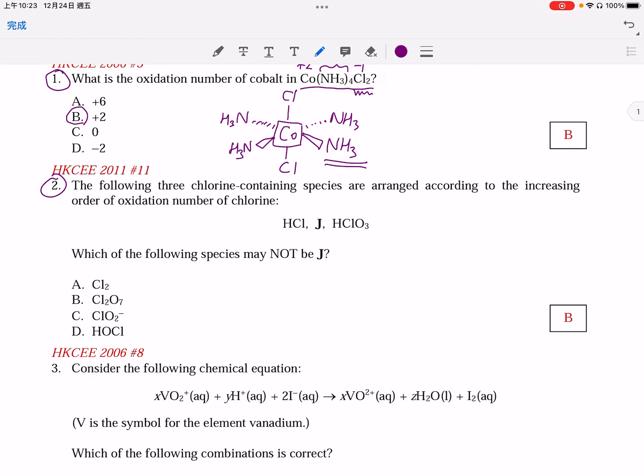Question number 2. These three species were arranged according to the increasing order of oxidation number of chlorine. So first of all, in HCl, the oxidation number of chlorine is negative 1. In HClO3, the oxidation number of chlorine is positive 5. How about the 4 options? I think you all can work well. So these are the oxidation numbers. So obviously, B is the answer.